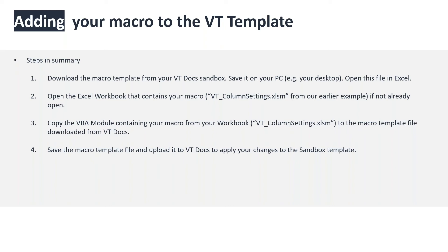To summarize the steps: first, download the macro template from your VisibleThread Docs sandbox and store it somewhere easily accessible — say, your desktop. Open it in Excel. Then open the workbook that contains the macro you've recorded. Copy the VBA module containing your new macro into the macro template file you downloaded from VT Docs. Save the macro template file and re-upload it to VT Docs.